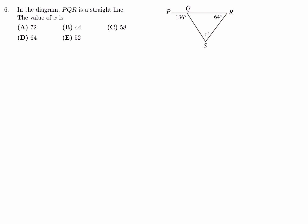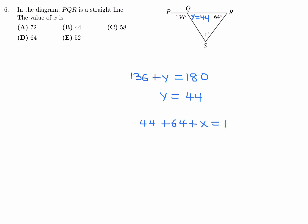In the diagram, PQR is a straight line. The value of X is. All the angles about a line equal 180. So if this is 136, and this is Y, then 136 plus Y is equal to 180, so therefore Y is equal to 44. And then all the angles of a triangle equal 180, so that means 44 plus 64 plus X is equal to 180. We can solve for X: X is 180 minus 44 minus 64.